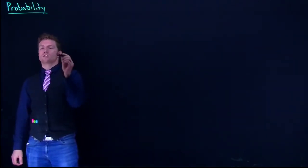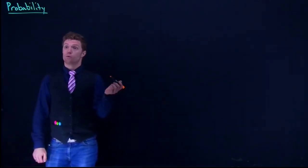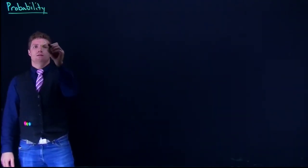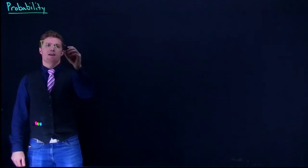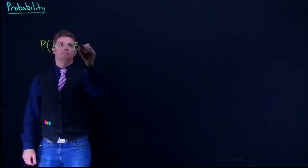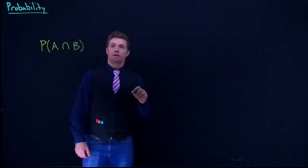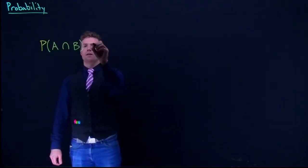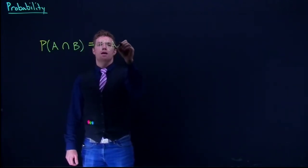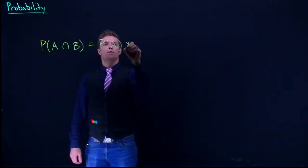Here are the general rules for multiplication, and it has to deal with the probability of A and B. Here's the generic rule: it's going to be the probability of A multiplied